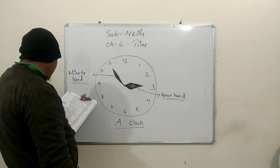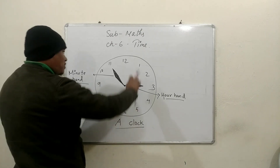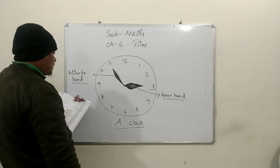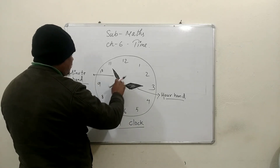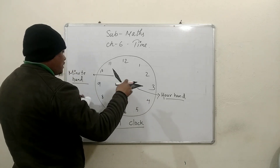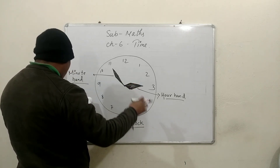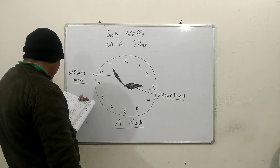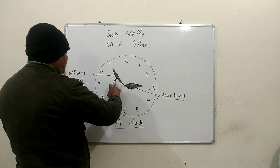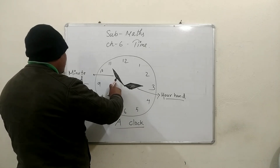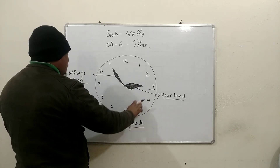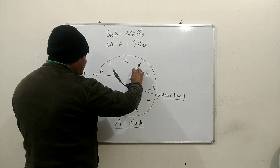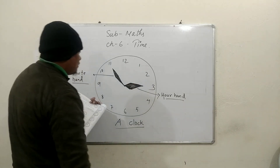The hands of the clock travel clockwise. The minute hand moves faster, while the hour hand goes slowly. The minute hand takes one hour to go around all 12 numbers, and the hour hand takes one hour to change from one number to the next.